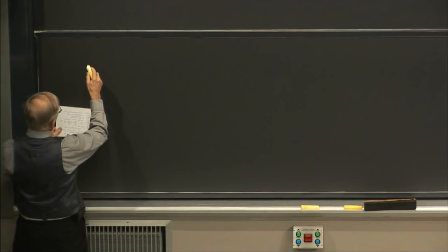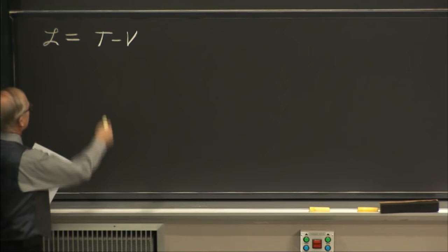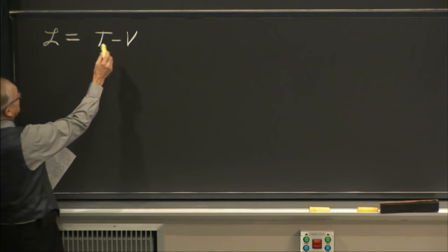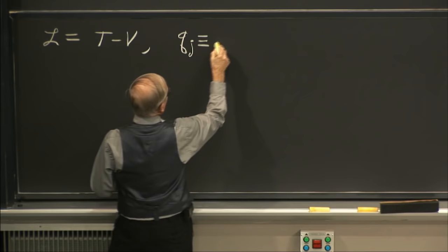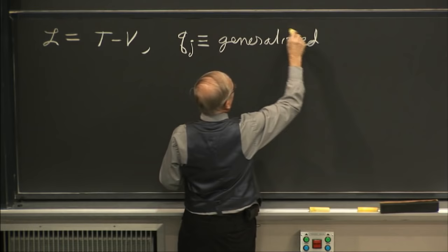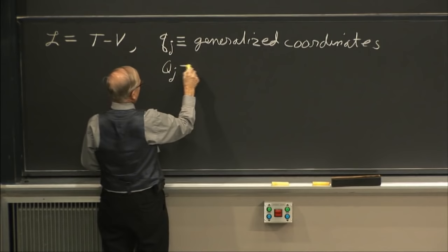So let's talk about how to use Lagrangian equations. I defined what's called the Lagrangian last time: T minus V, the kinetic energy minus the potential energy of the entire system — total kinetic and total potential energy expressions. Then we have some quantities q_j's, defined as the generalized coordinates, and the capital Q_j's are the generalized forces.